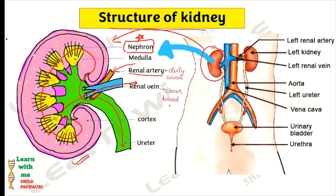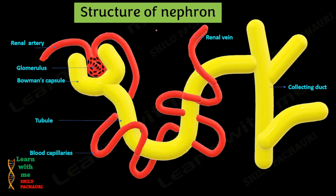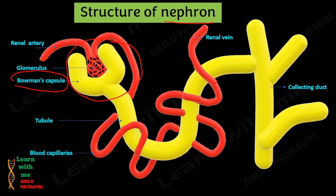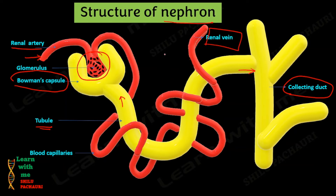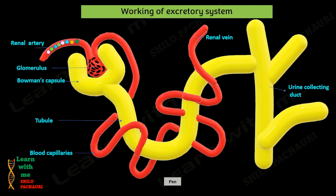Now let us study the nephron in detail. The kidney is made up of a large number of excretory units called nephrons. Nephrons have two main parts: the first is called the Bowman's capsule — this cup-like structure you see is the Bowman's capsule. The second part is the tubule, which is the lower end of the nephron. One end of the tubule is connected to the Bowman's capsule, and the other end is connected to the urine collecting duct. Inside the Bowman's capsule, there are many blood capillaries. These capillaries are connected to the renal artery at one end, bringing all the dirty blood from the body, and the other end is connected to the renal vein, through which all the filtered clean blood re-enters the body.